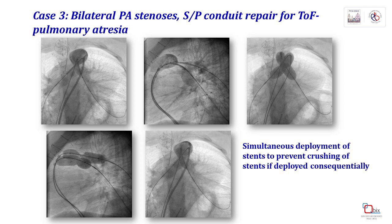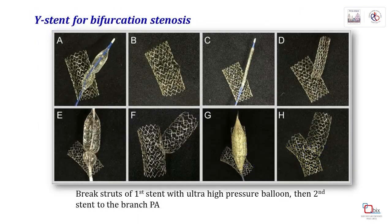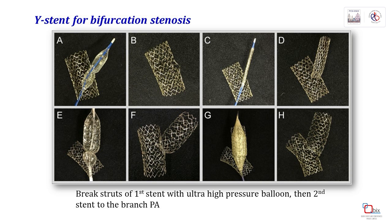Bifurcation stenosis is very challenging and requires simultaneous deployment to prevent crushing of stents. It is best done by having two experienced operators. It is important to have sheath and stent position in each PA branch checked repeatedly before final inflation, and to note there will be a drop in cardiac output and blood pressure during inflation. Some have advocated the Y-stent technique instead of simultaneous deployment: a first stent is implanted in one vessel, then an ultra-high-pressure balloon breaks the struts so a second stent can be implanted into the other pulmonary artery.